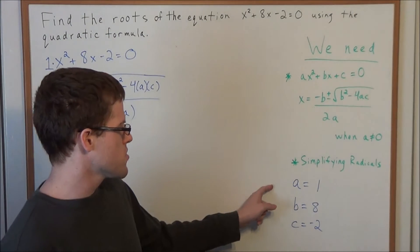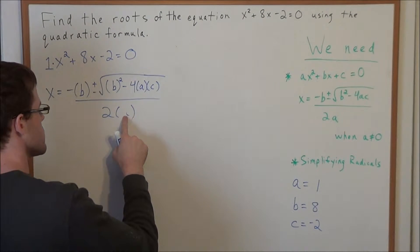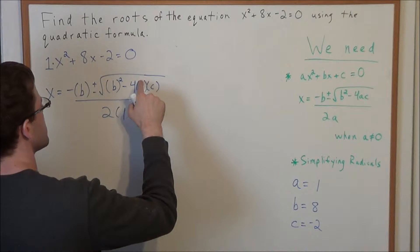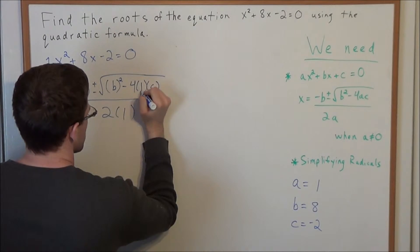So now what we need to do is substitute a = 1. So whenever we see an a, we're just going to replace it with 1. So we have 2 times 1 in the denominator, and on this 4ac piece, we're replacing the a with 1.